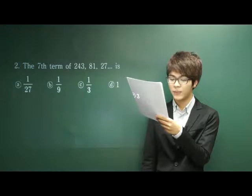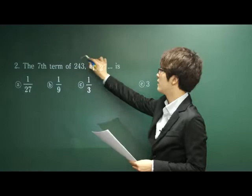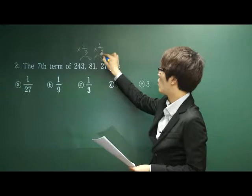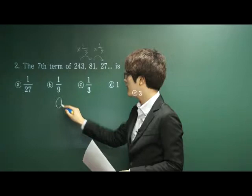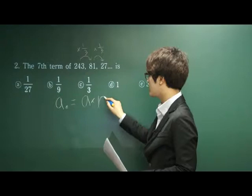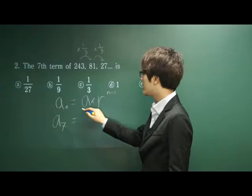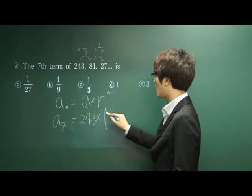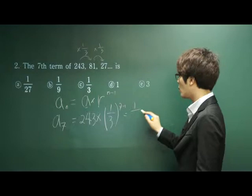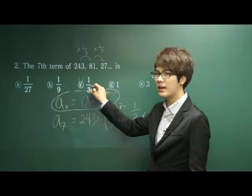Let's look at number 2. The seventh term of 243, 81, 27 is... We see some kind of sequence here. The rule is multiplying by 1/3 each time. The nth term of a geometric sequence is the initial figure times the rate to the power of n minus 1. So the seventh term equals 243 times (1/3) to the power of 6, which gives us 1/3. If you're familiar with finding the nth term of a geometric sequence, this is a very easy question. The correct answer is C.